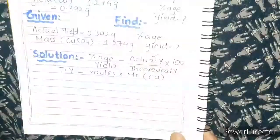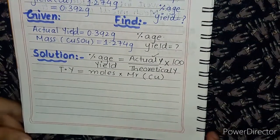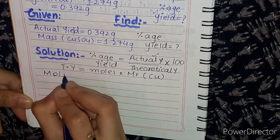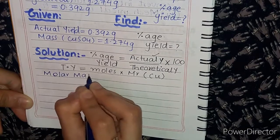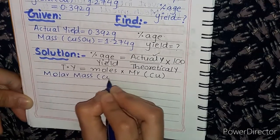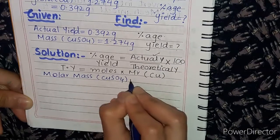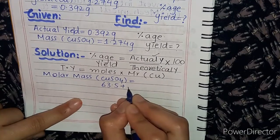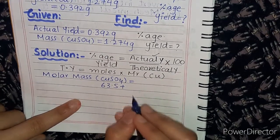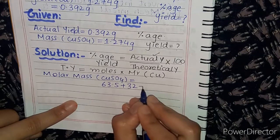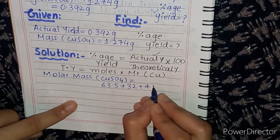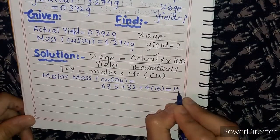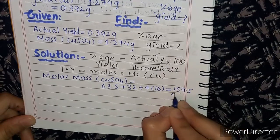First, we will find the molar mass of CuSO₄ (copper sulfate). Copper is 63.5, sulfur is 32, and oxygen has 4 atoms each of mass 16, giving a total molar mass of 159.5 grams per mole.